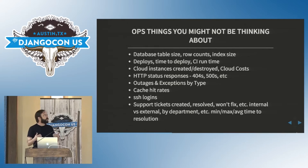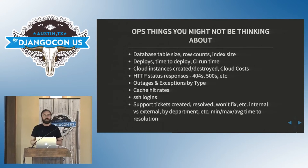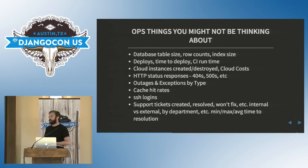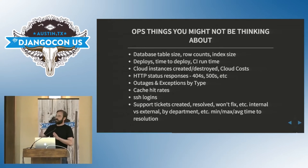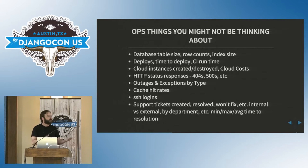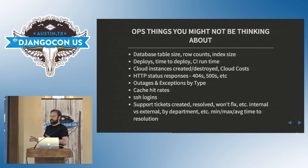More importantly than keeping track of raw numbers, we need to make sure that we segregate some of this data. For example, support tickets — we don't want just tickets created and resolved, but we want to know: is this created by somebody internal versus external? What department? We want to have a little more dimension to some of these data points so that we can see whether these support tickets are all generated by customers or by that one guy in one department who's really just kind of a pain.